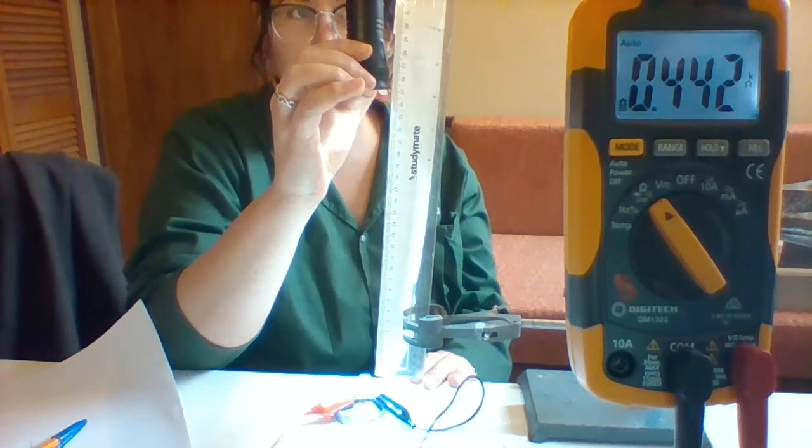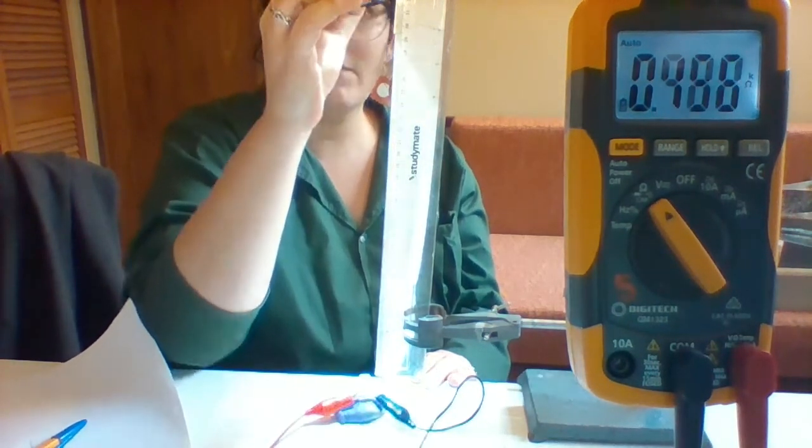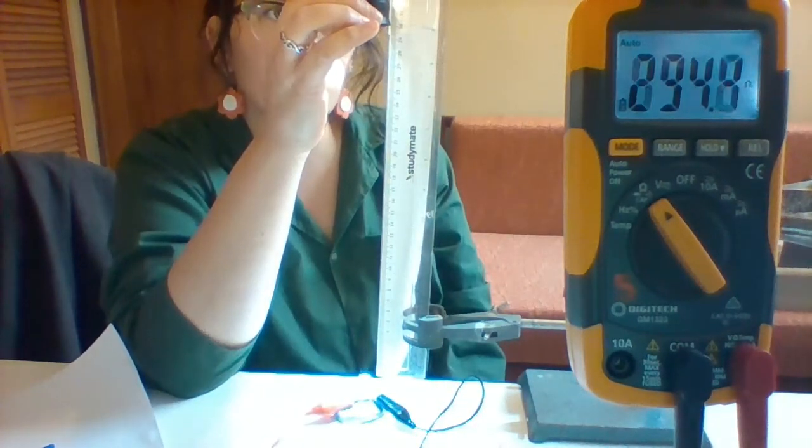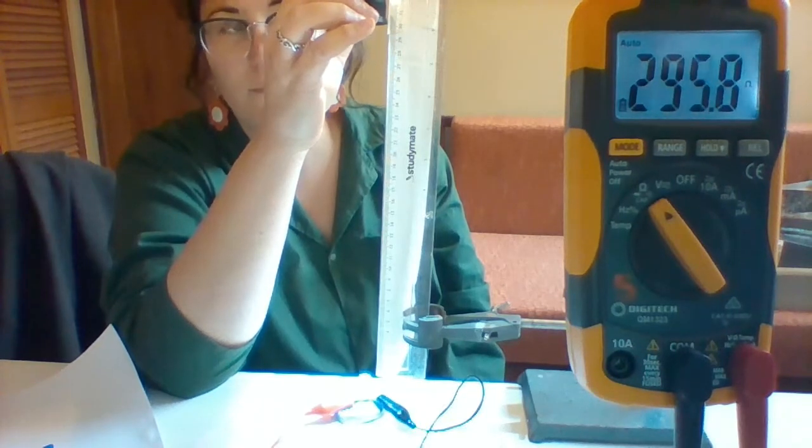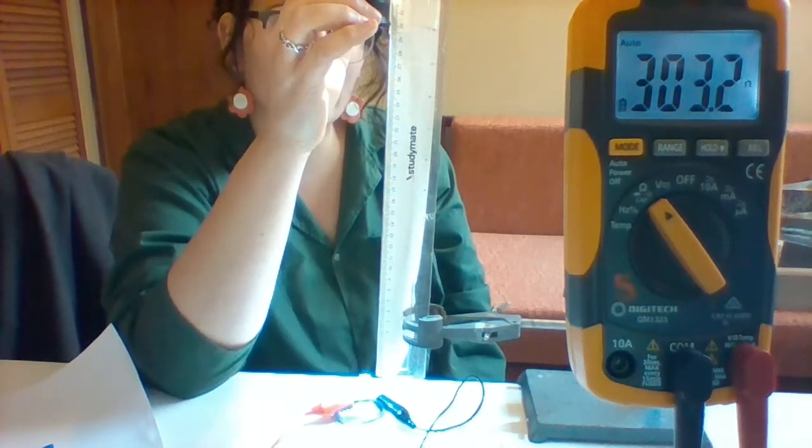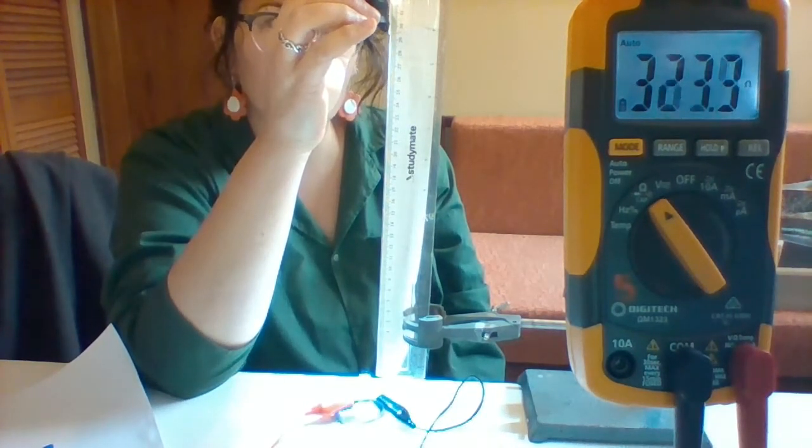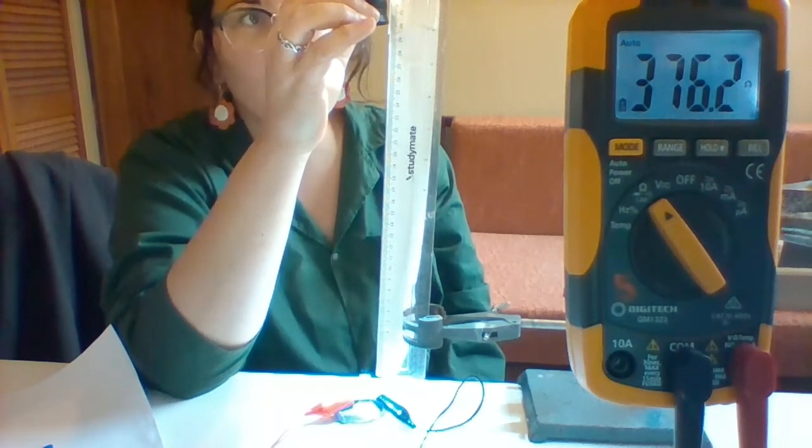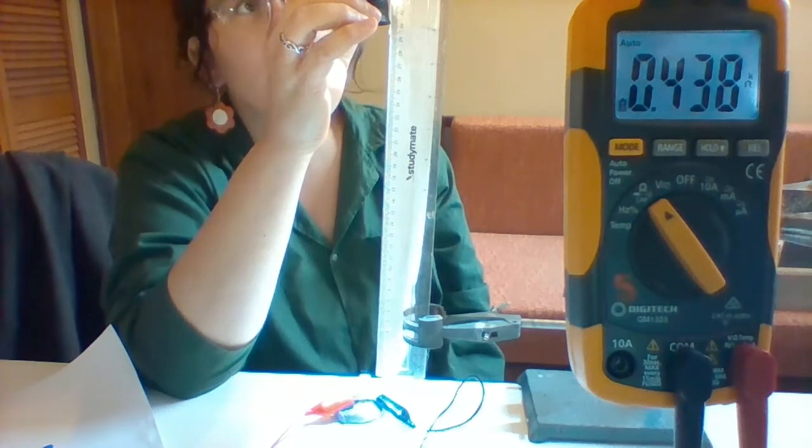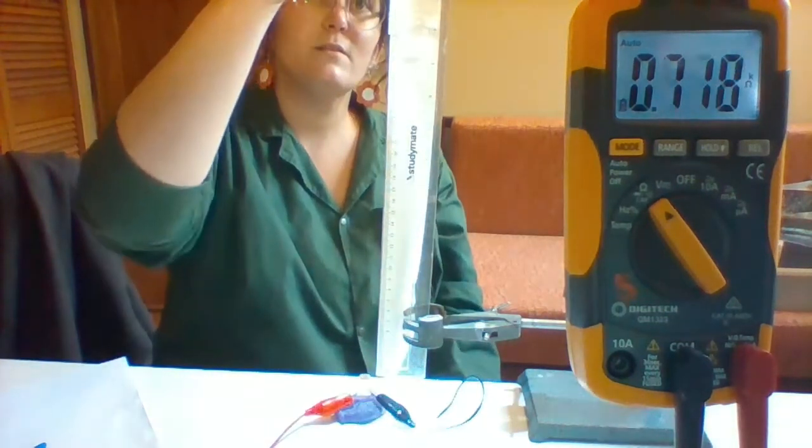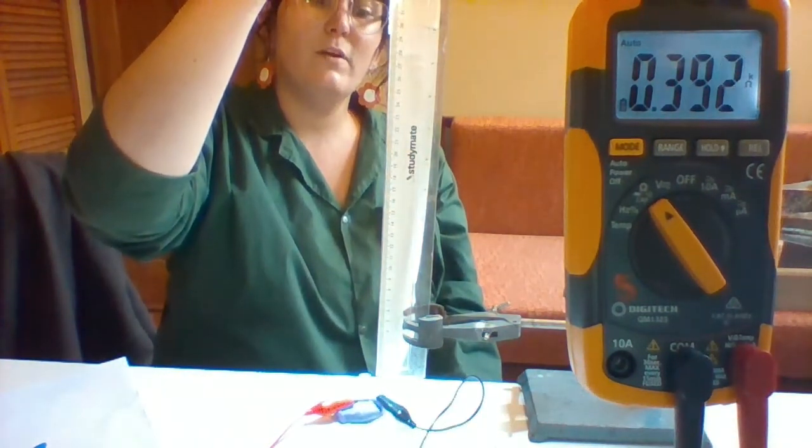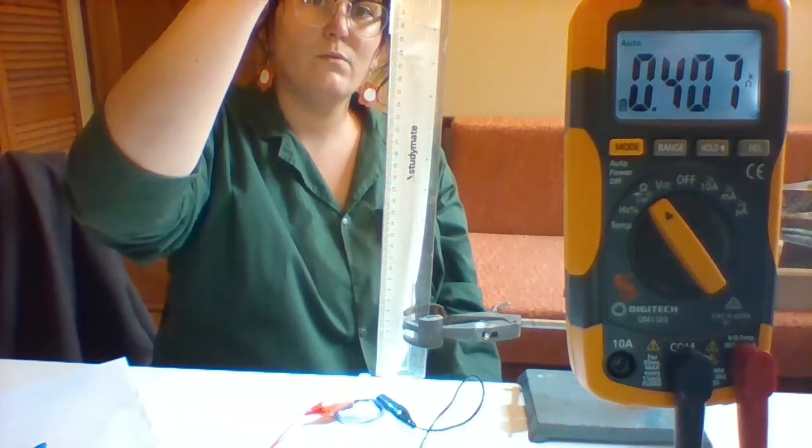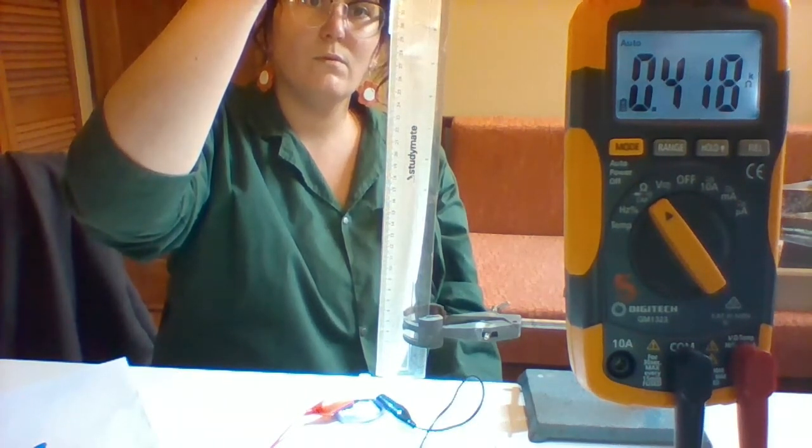And we'll do 30 centimeters now. This is 30 centimeters away. What's the resistance look like now as opposed to when it was much closer? And the final point I'll give you will be 40 centimeters. So that's 40 centimeters away, 400 millimeters. What are we looking at?